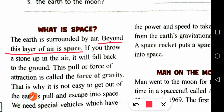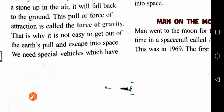If you put a paper or pencil on top and let go, it will go down. Why? Because of gravity — the gravitational force of the Earth, also called gravitational pull. This force of attraction is called gravity. This is why it is not easy to get out of Earth's pull and escape into space.